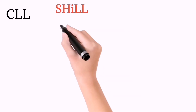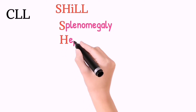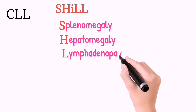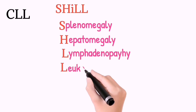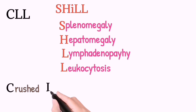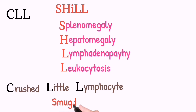CLL clinical features can be remembered with the mnemonic SHELL, where S is for splenomegaly, H is for hepatomegaly, and both L's are for lymphadenopathy and leukocytosis. Additionally, in CLL, the C represents crushed or fragile lymphocytes, which is the very characteristic diagnostic laboratory finding of CLL called the smudge cell.